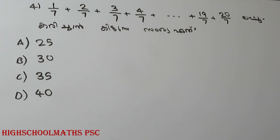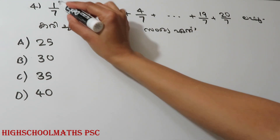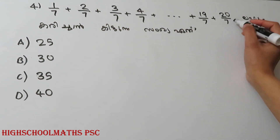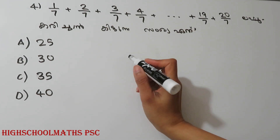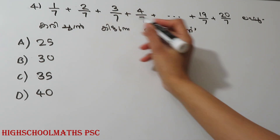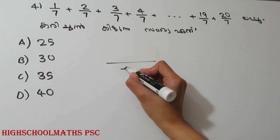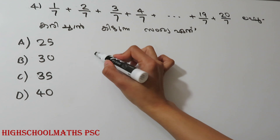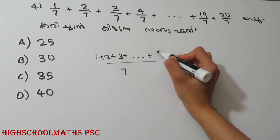The 4th question is to find the value of this expression. You can find the value of 1 by 1, 2, and 3. This is the value of 1 by 1 by 2 and 3. You can also find the value of 1 by 2 and add the value of 1 plus 2 plus 3 plus 20.